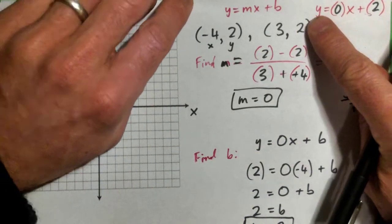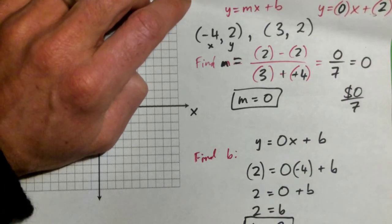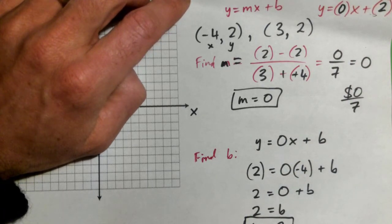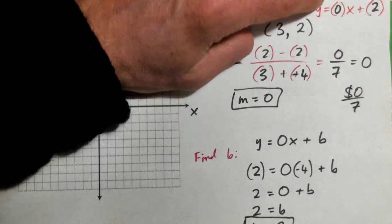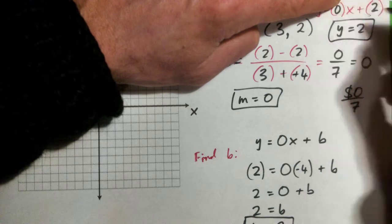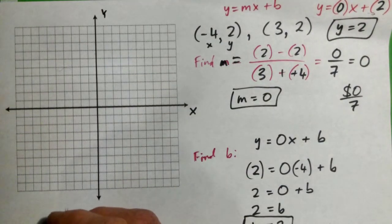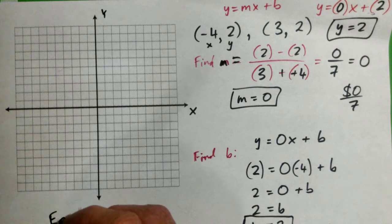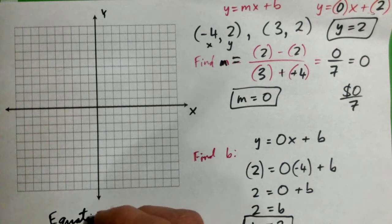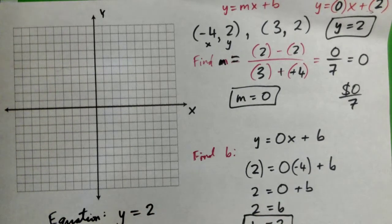How would you simplify y = 0x + 2? Yeah, because 0x is 0, so it's just y = 2. And that's the answer. That's the equation. I'll just put it over here to make it official. The equation, the answer is y = 2. That's the answer. Done.